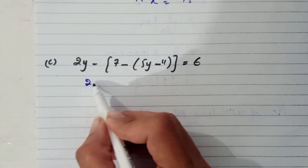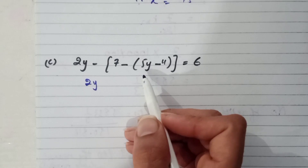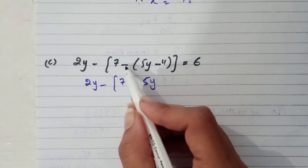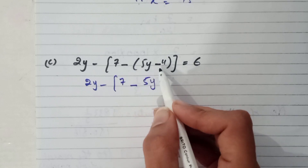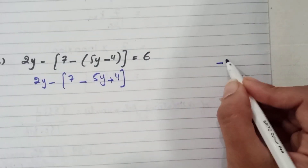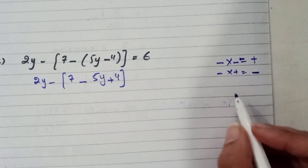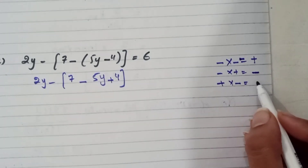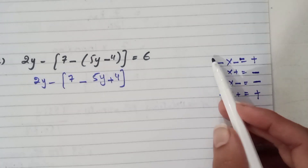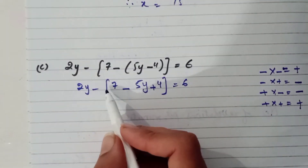Part c: first we open the brackets. We get minus 7, minus 5y, and minus multiplied by minus gives plus 4. Remember the sign rules: minus times minus is positive, minus times positive is negative, positive times negative is negative, and positive times positive is positive. The result equals 6, then open the next bracket.